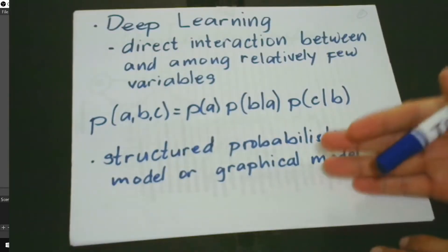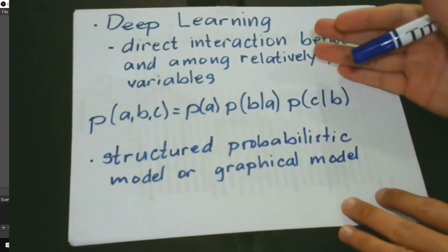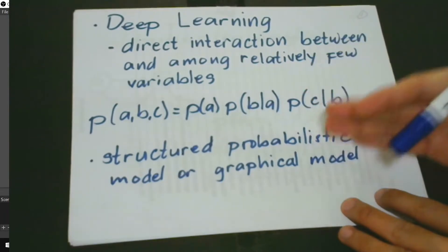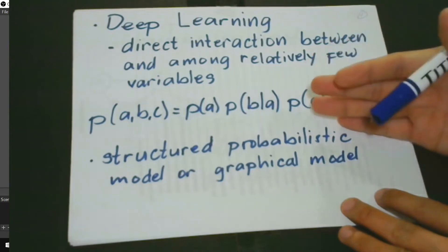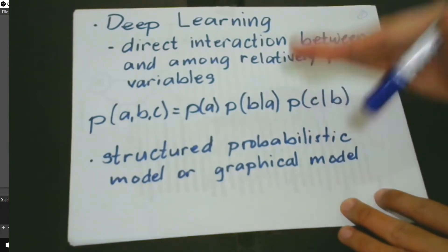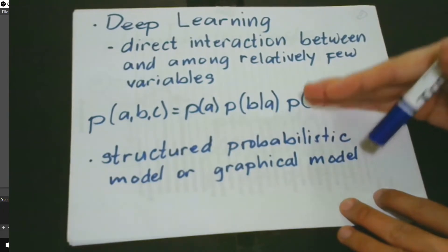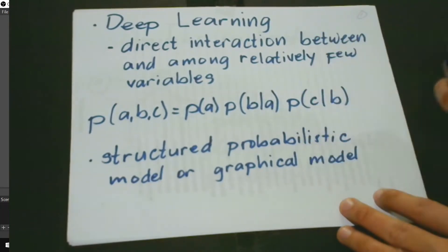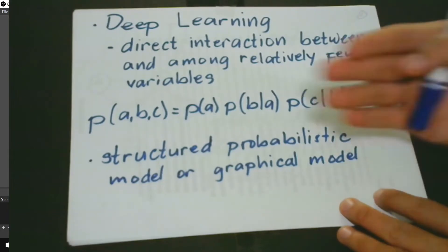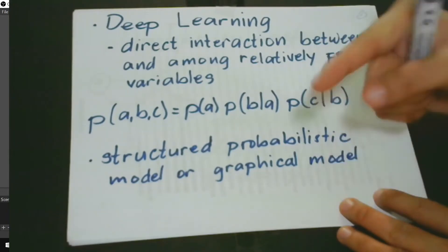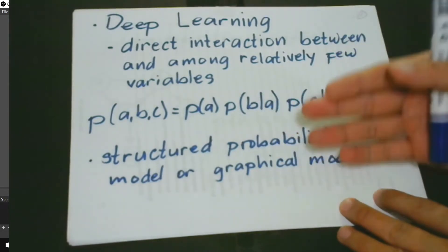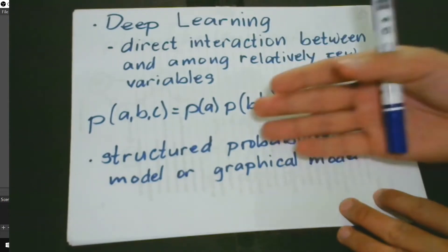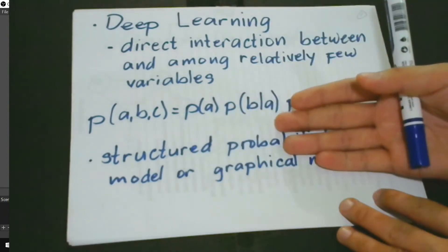When we do deep learning projects, we are oftentimes faced with a great challenge considering a large number of random variables in dealing with probability distributions. We know that there is a direct interaction between and among relatively few variables. If you don't have any idea about probability distributions, I suggest that you study this lesson — links are given in the description below.